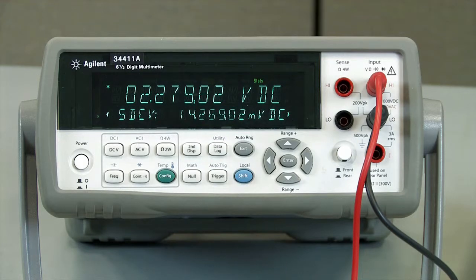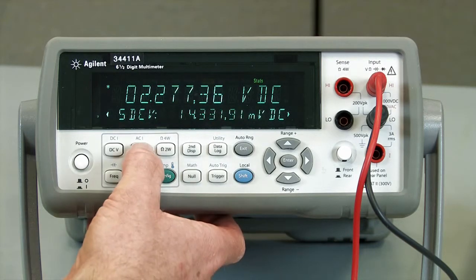And once again, we'll go ahead and look at our standard deviation. And so the standard deviation is a little bit lower than what we saw before. The integration time is almost identical to our 10 NPLC. So the reading rate is the same, but by making that slight adjustment, we can really improve the amount of noise that we're seeing on our reading.